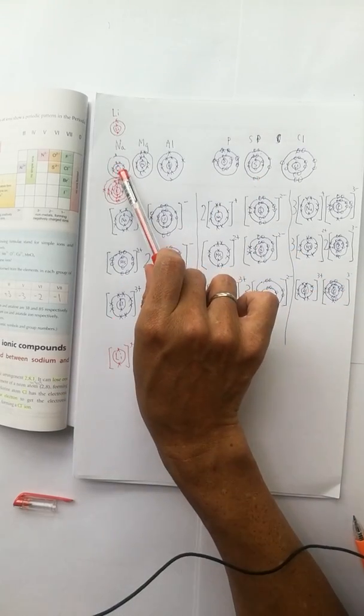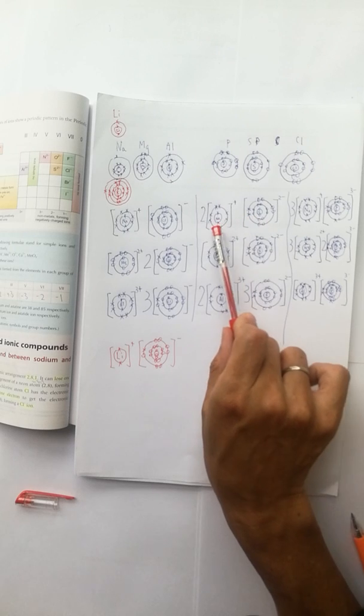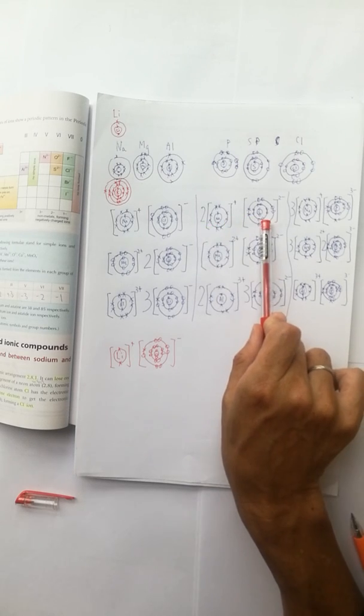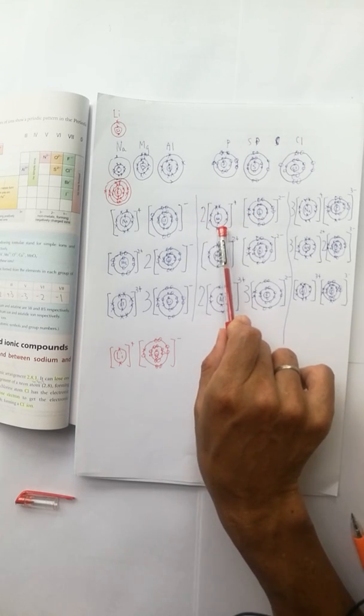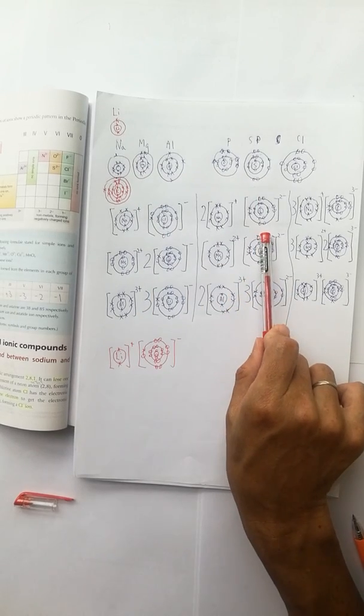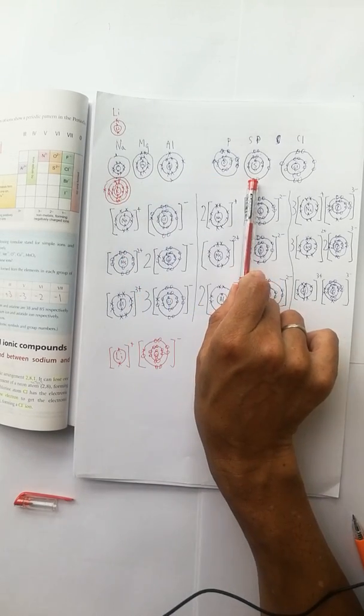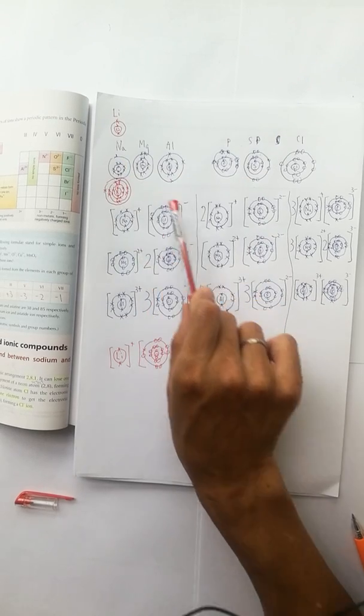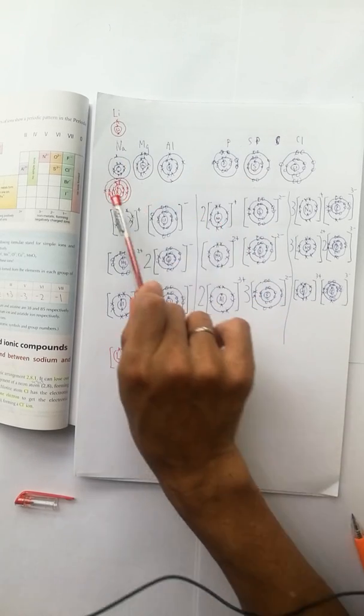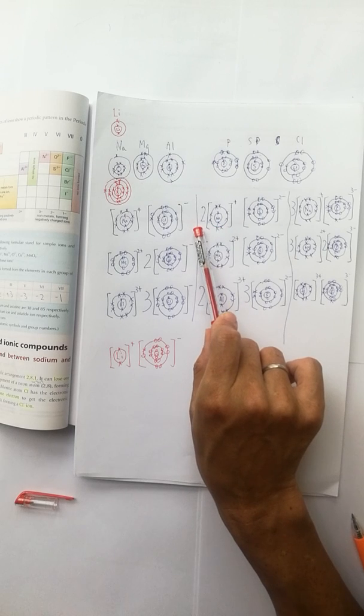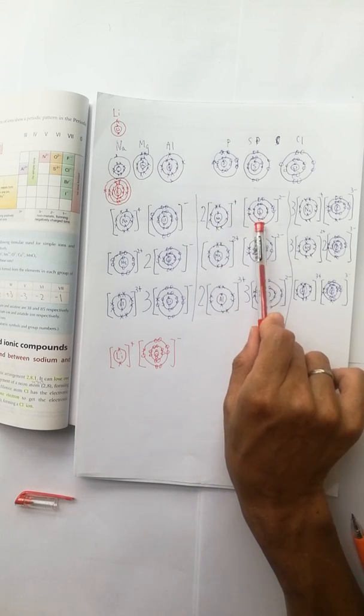Now, you can draw sodium and sulfur. 2Na and 1S. How about the K and S? We just replace the sodium by potassium. 2K plus S2 minus.